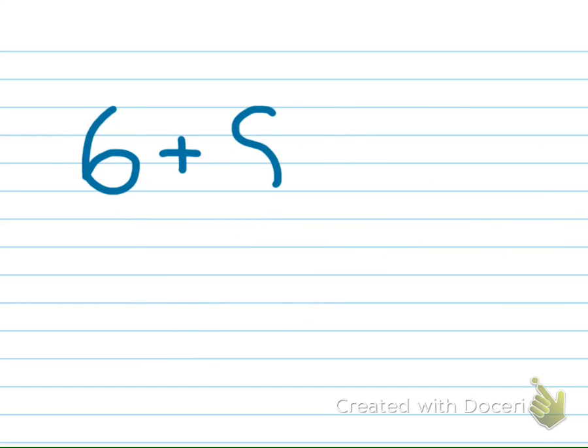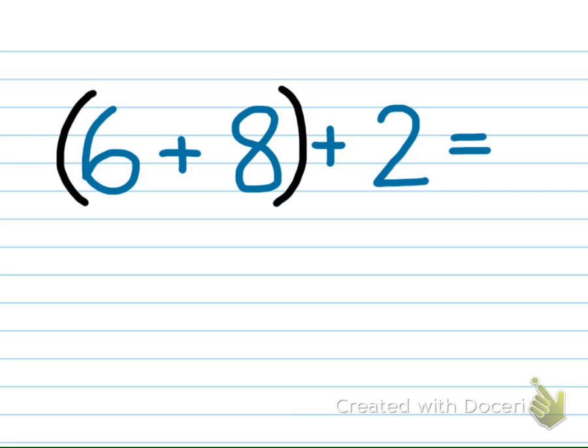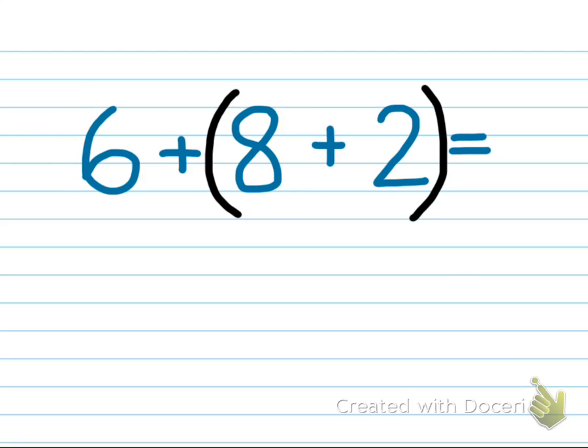Sometimes grouping the numbers differently will highlight a pattern that makes the problem easier to solve. Instead of grouping the 6 and 8, we can group the 8 and the 2 inside the parentheses.